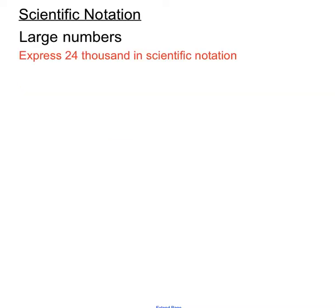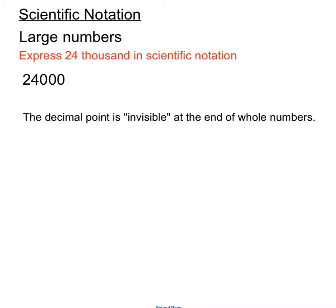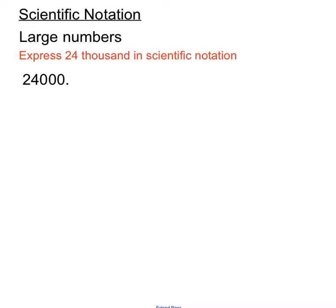Very large numbers can be expressed in scientific notation. This question asks us to express 24,000 in scientific notation. At the moment it doesn't look like there's any decimal point in this number, but we can remember that the decimal point is kind of invisible at the end of whole numbers. So that's where we'll consider the decimal point to be.